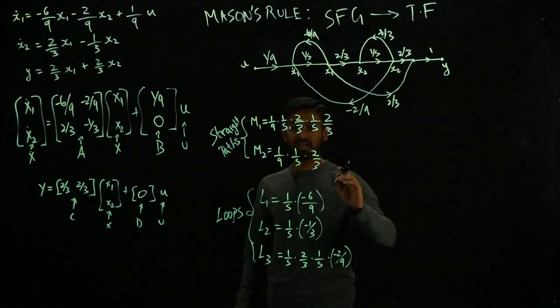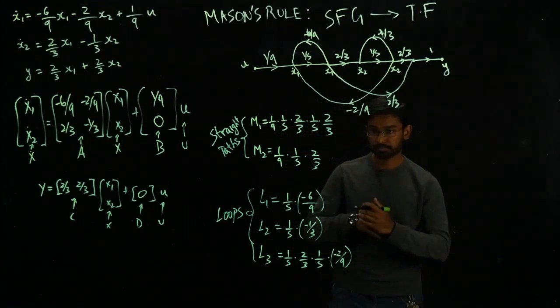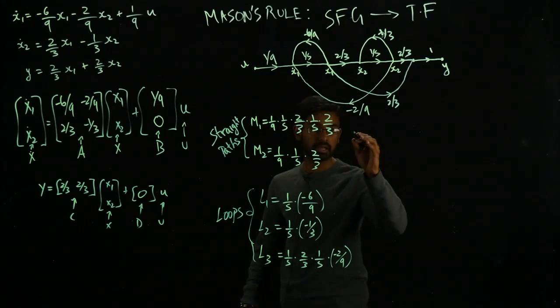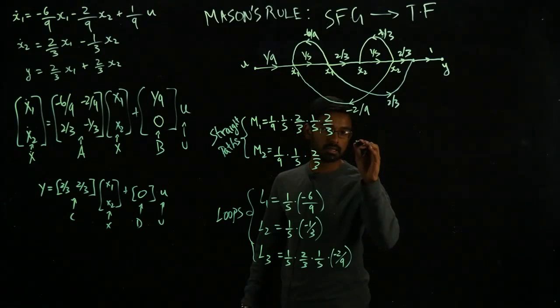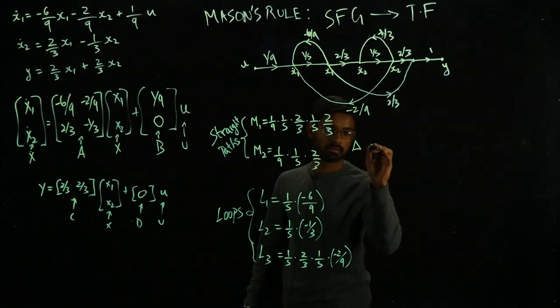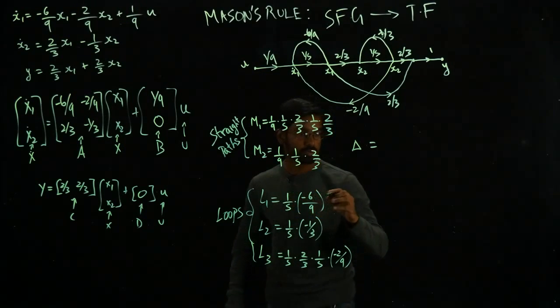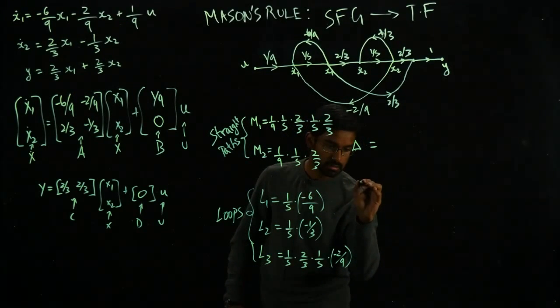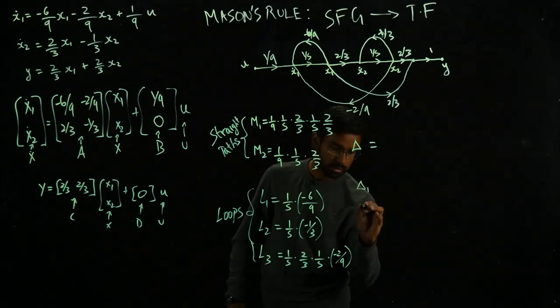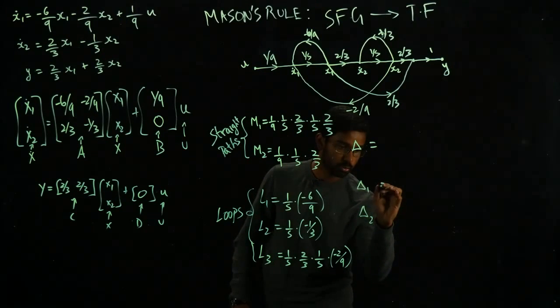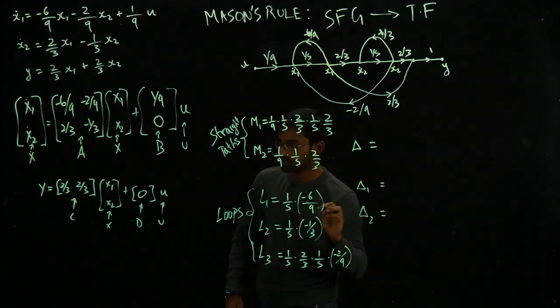So once we have this, we can calculate other variables that I need. I need what is called delta. And then I also need for every forward path I have, I need delta 1 and delta 2. So we will look into how we are going to calculate these guys.